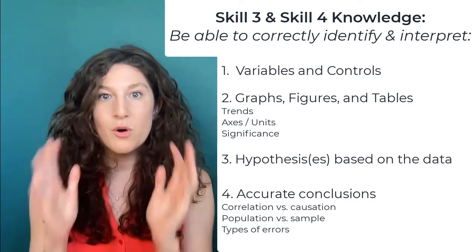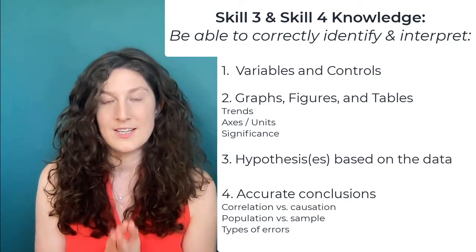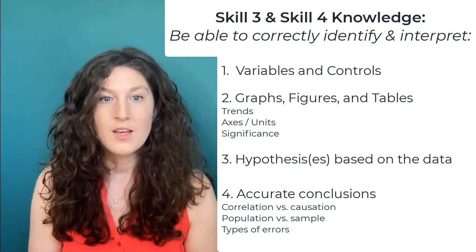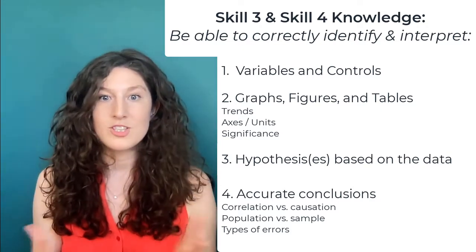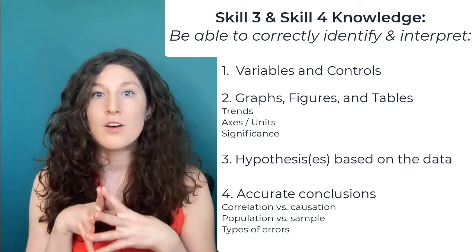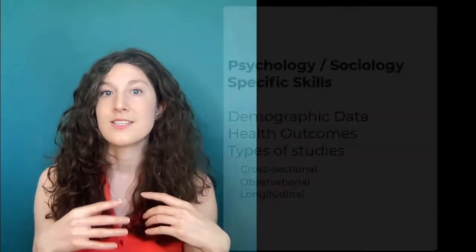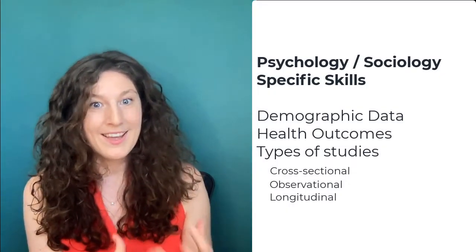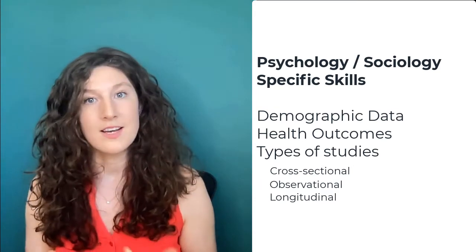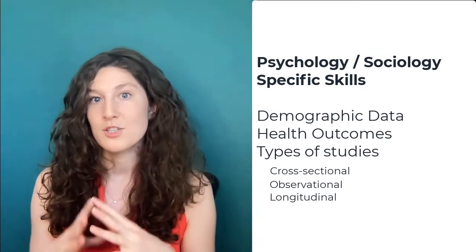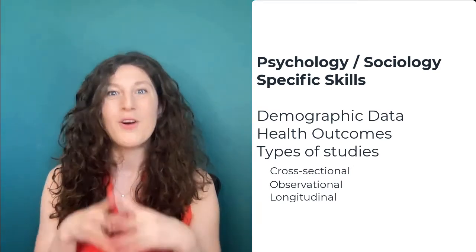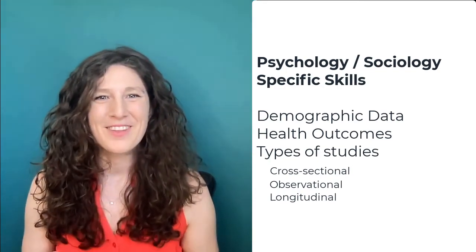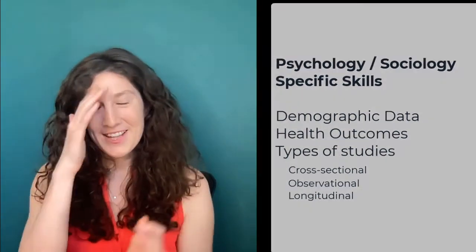Those are your core competencies for these two skills. In addition, for the psych-soc section, you will also be asked to answer questions on things like demographic data and health outcomes, and types of study designs that can be done on people, such as cross-sectional, observational, or longitudinal studies. So that's our overview — now, how do we prepare for this in an effective way?